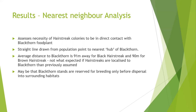When I performed the nearest neighbour analysis, the purpose was to investigate the necessity of hairstreak colonies to be in direct contact with their blackthorn food plant. This analysis tool draws a straight line from the population point to the nearest hub of blackthorn. The average distance to the blackthorn is 91 metres for the black hairstreak and 90 metres for the brown hairstreak, which is not what you'd expect if hairstreaks are localised to the blackthorn as previously assumed. It may be that blackthorn stands are reserved for breeding only, before dispersal of the adults into the surrounding habitats.